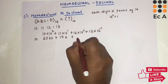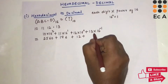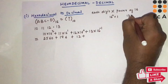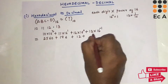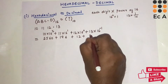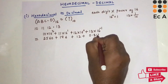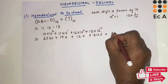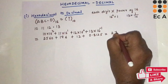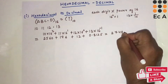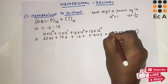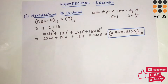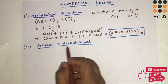Continuing: 12 × 16⁰ = 12, plus 13 × 16⁻¹, which is 13 divided by 16, giving 0.8125. Adding all these values together, we get the decimal equivalent: 2748.8125 base 10. This is the decimal equivalent of the given hexadecimal number ABC.D.